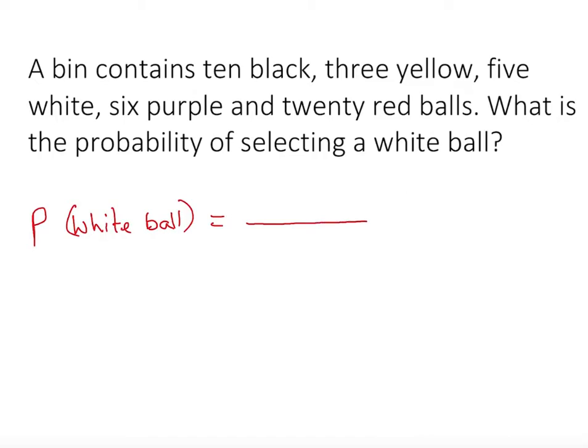The total should be in the denominator and what we're looking for in the numerator. We're looking for white balls. Let's take a look which one is white. Clearly this is white. How many of them? Five of them.